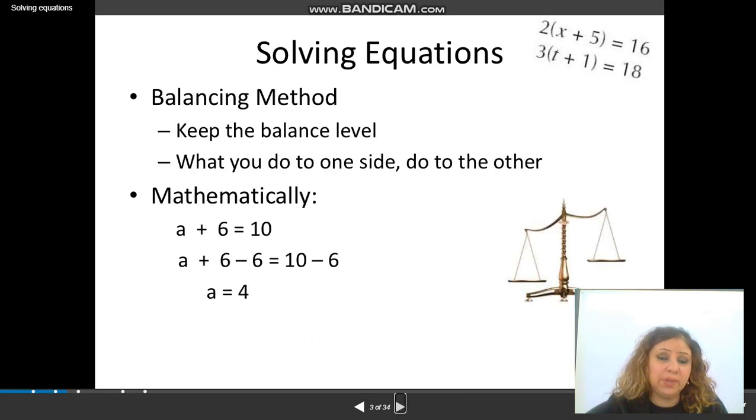Balancing method. Keep the balance level. What you do to one side, do to the other. Remember that you have to keep the balance in the equation. The right side should be equal to the left side. So this is what we did already here. We need to subtract both sides by 6 to get rid of this 6 to have the variable alone at one side.